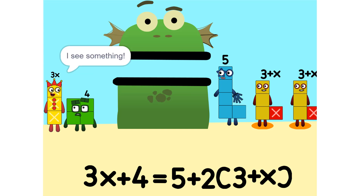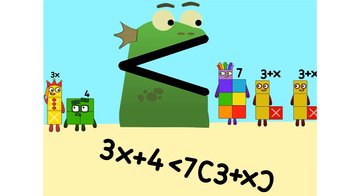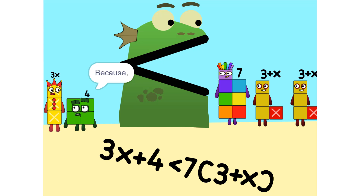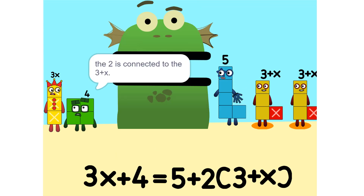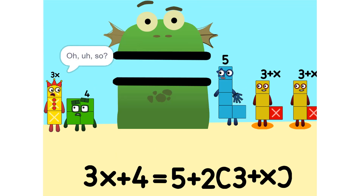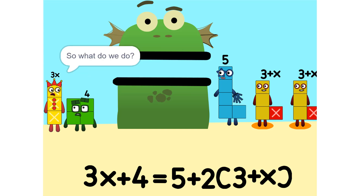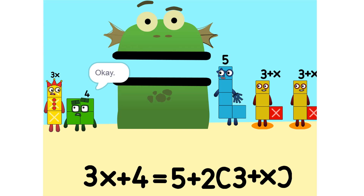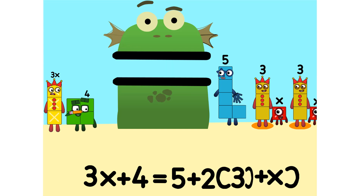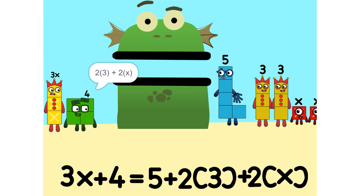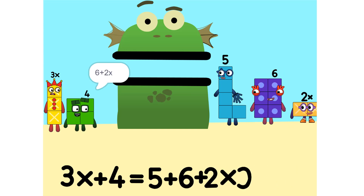I see something — we can add these. Why did that happen? Because the 2 is connected to the 3 plus x. It's like adding apples and oranges — you can't. So what do we do? See the 2 times (3 plus x)? That's the same as 2 times 3 plus 2 times x, which is 6 plus 2x.